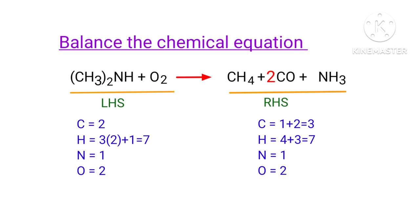Now we need to balance the Carbon atoms. To make there are 4 carbon atoms on both sides, we need to put a coefficient of 2 in front of (CH₃)₂NH and a coefficient of 2 in front of CH₄.